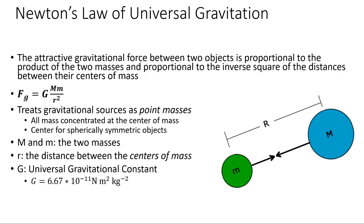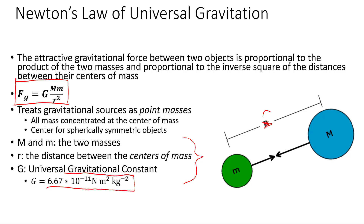The law says that the gravitational force is attractive between any two objects in the universe, and it's proportional to the product of the two masses, and also proportional to the inverse square of the distance between the centers of mass of the objects. We can sum that up in an equation: the force of gravity equals G times M times m divided by r squared, where r is the distance between the centers of mass. Big M and little m are the masses themselves. Big G is a constant of proportionality to make the units work out correctly. In SI units, big G is 6.67 times 10 to the minus 11 newton meters squared per kilogram squared.